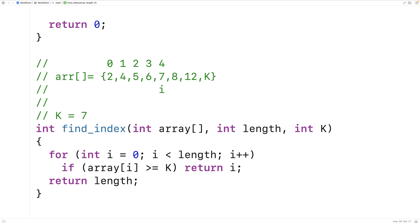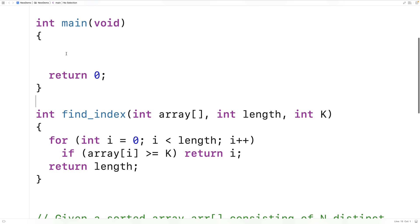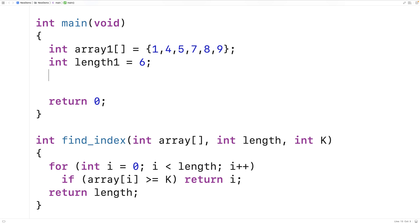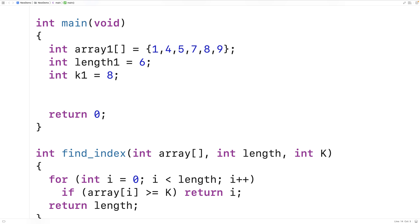And this will do it. This right here will solve the problem. But we should test our function out. So let's write some code to test that out now. Up here, we'll say int array 1 is equal to 1, 4, 5, 7, 8, 9. The length of the array is 6. So we'll set this variable length 1 to 6. And for our K value, let's choose initially 8.